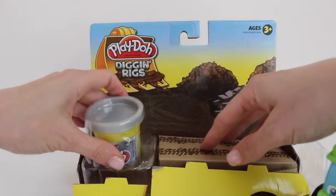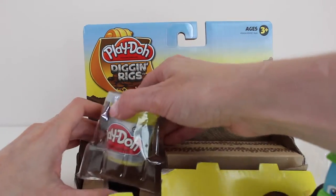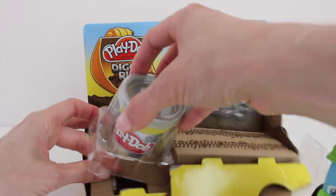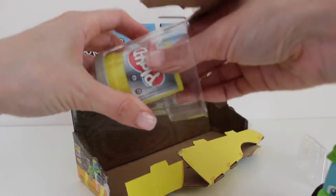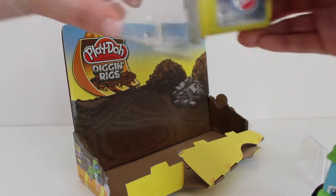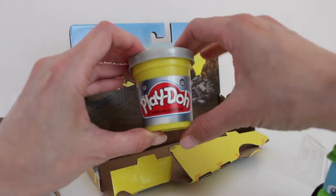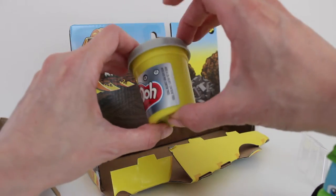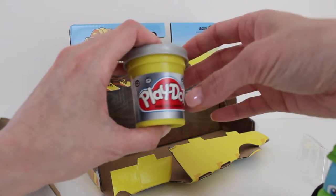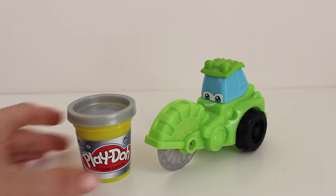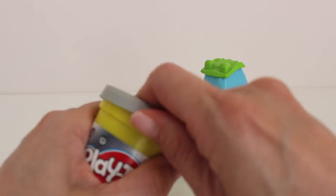Inside we also got a container of gray Play-Doh. This container of gray Play-Doh will be perfect for making cement blocks with our truck. So let's start off by making some cement blocks with our Play-Doh.